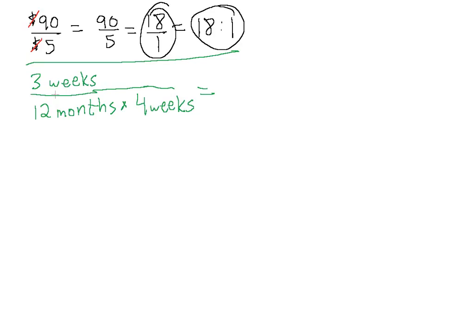Just as we did above, this cancels with this. And now we have 3 over 48. We simply have 3 over 48, which will simplify to 1 over 16. So the ratio of 3 weeks to 12 months is 1 over 16 or 1 to 16.